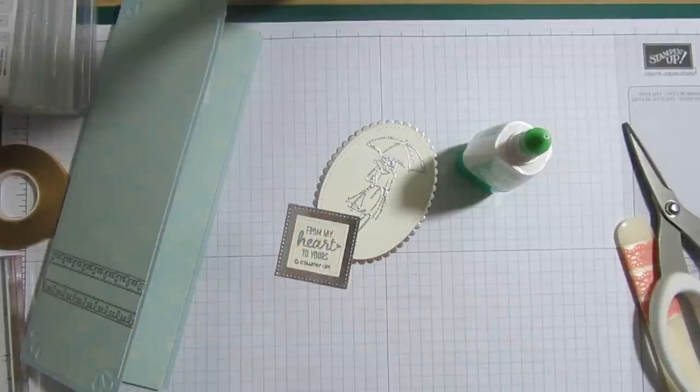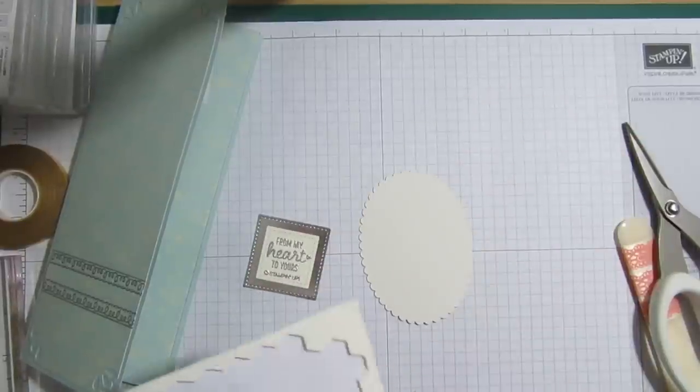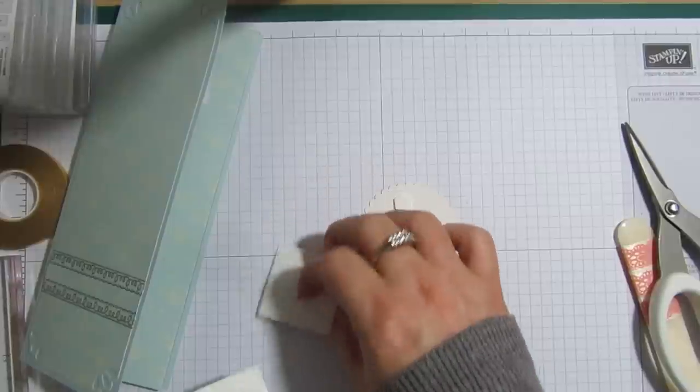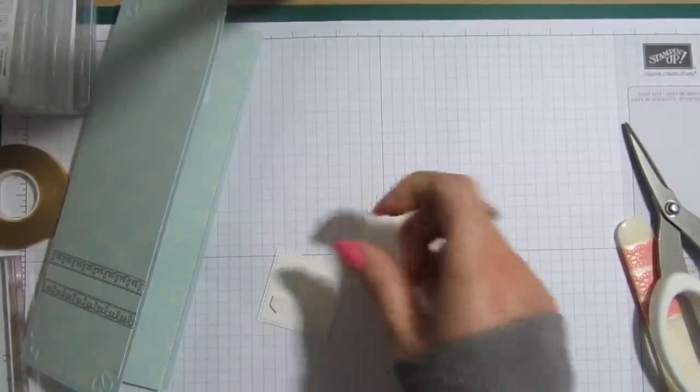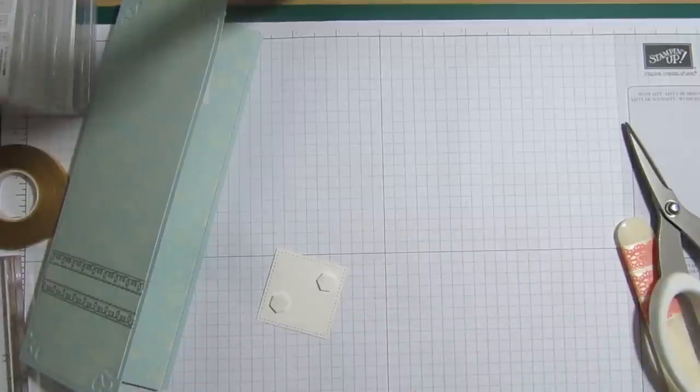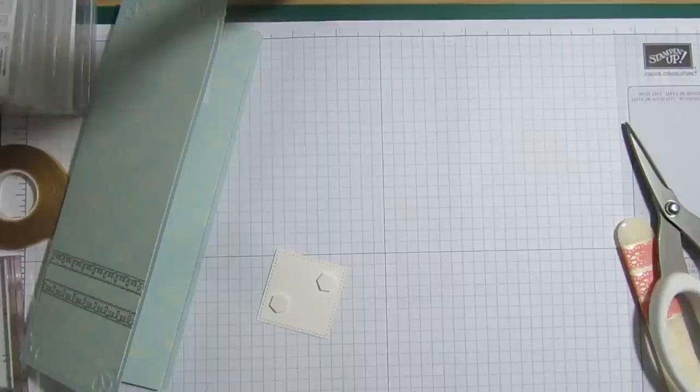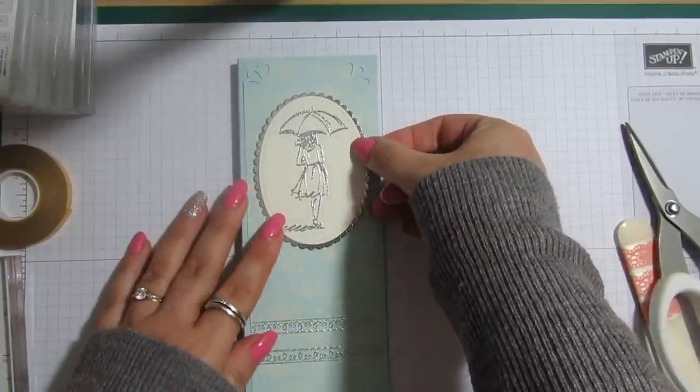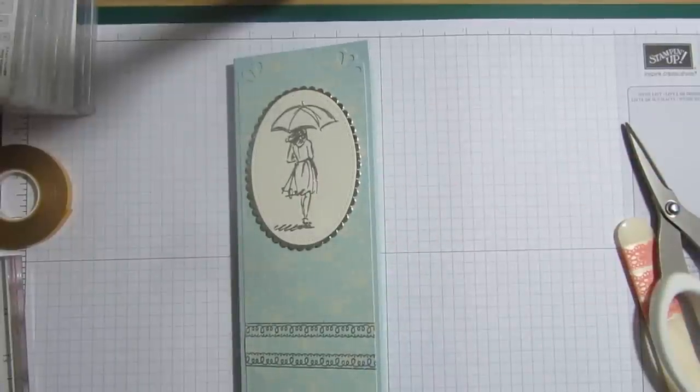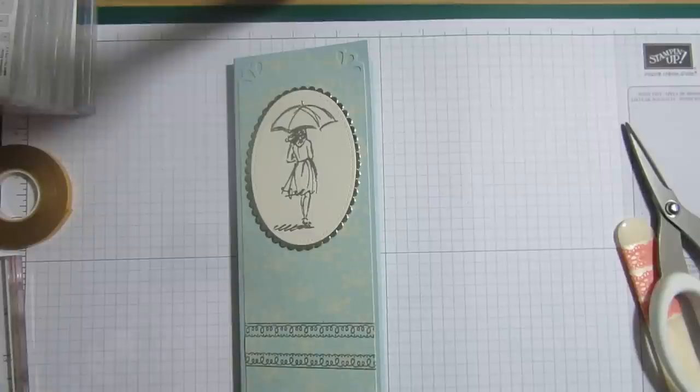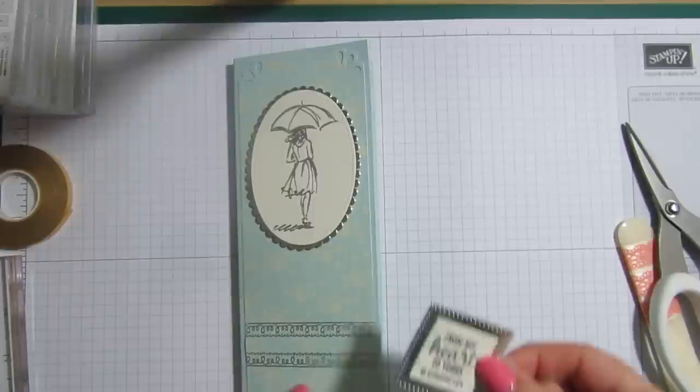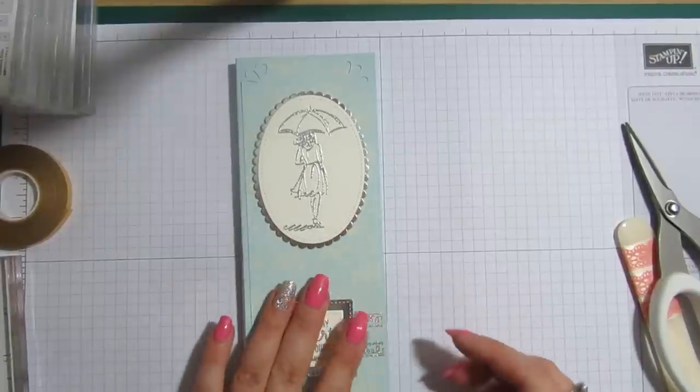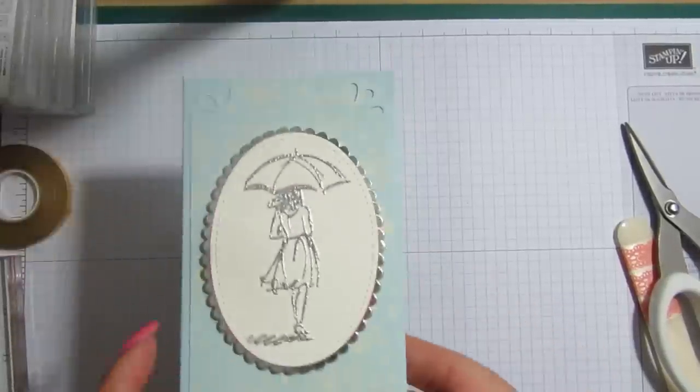There we go and if you just take some dimensionals just pop them on the back. Okay so we're gonna put the lady just about there. Just think this makes such a pretty gift for somebody. You know I mean they're just a little cheap notepad but you can make them look so much more by just adding some pretty things and then the sentiment is just gonna go kind of in the middle of the two heat embossed patterns that I made and there we go I just think it's so so pretty I really do.